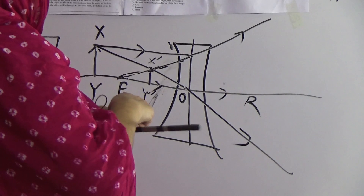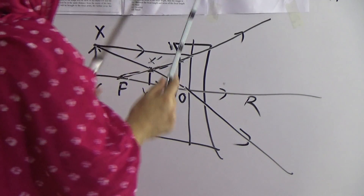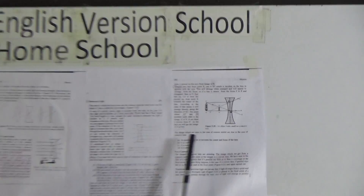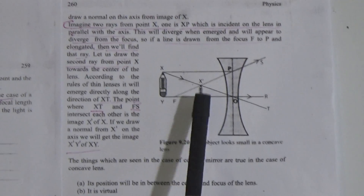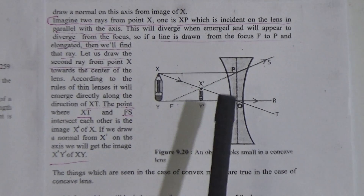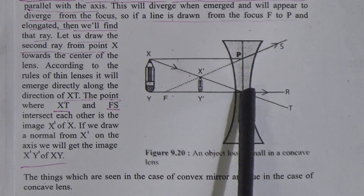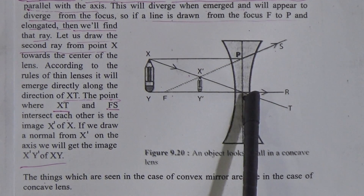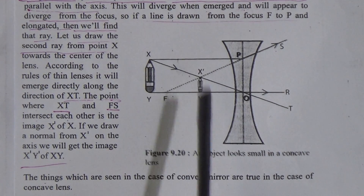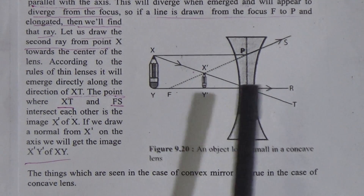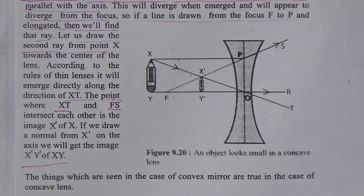From this figure, we can say that the position of the image will be between the center and the focus of the lens. It is virtual, it is erect, and it is small. Now come to the next topic — convex lens.